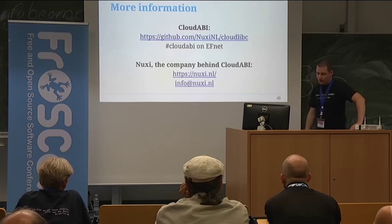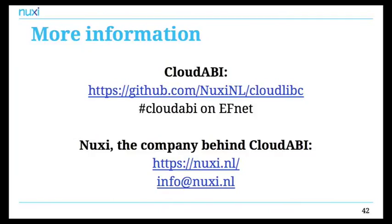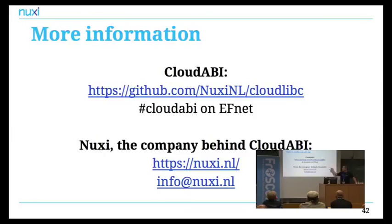These are Cloud ABI in a nutshell. I hope I clearly explained what the intent behind Cloud ABI is, how it works, and what the use cases are. There is a page on GitHub — the cloudlibc repository — which has a nice introduction and some links to interesting articles and the source code itself. Even if you're not interested in Cloud ABI, it's also a really high quality C library, so if you're interested in how a certain C library function is implemented, be sure to check it out. There's also an IRC channel on EFnet called Cloud ABI. Finally, my company Nuxi — if you'd be interested in commercial support or could think of a killer use case, contact us. That'll be it — are there any questions?